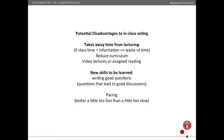If you have to err on one side, it's better to go a little too fast than too slow. When you see that more than half of the students have voted, you should give the remaining students one or at most two minutes to wrap it up and get going.